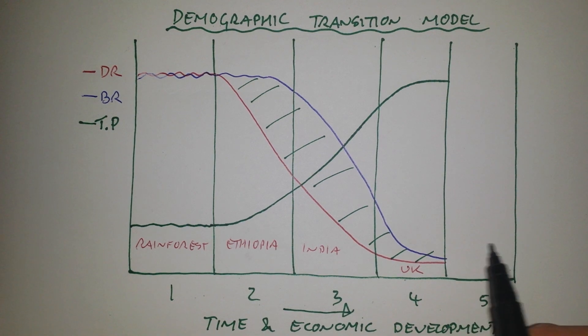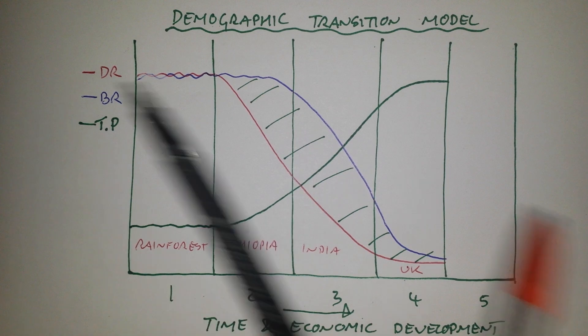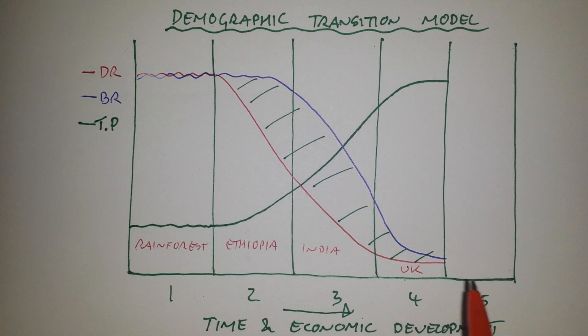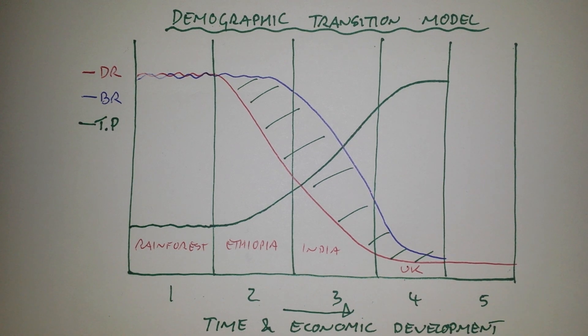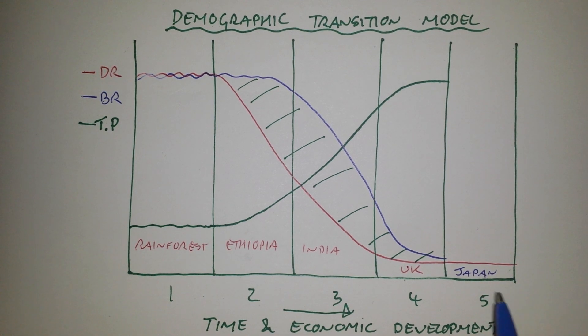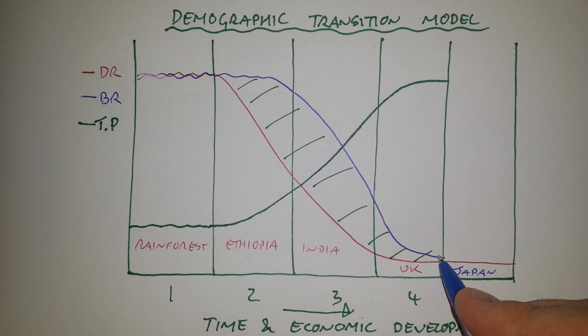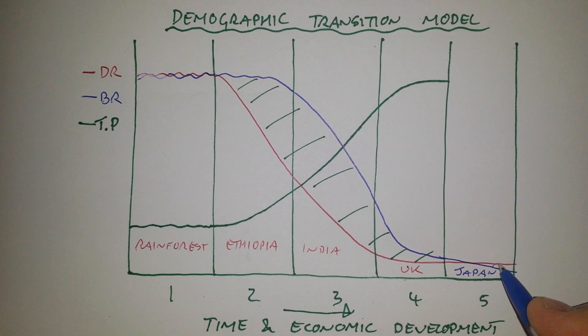Now, you might have noticed there is also a stage five on this model. This is a new stage that had to be added. And the reason for that is because although the death rate remains low and steady in stage five, there are some countries in the world, such as Japan, where the birth rate has now got so low that it's actually dropped below the death rate.